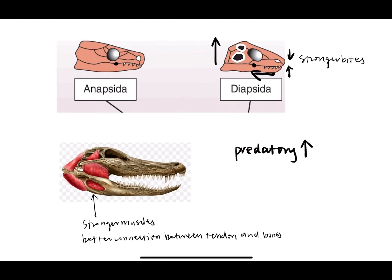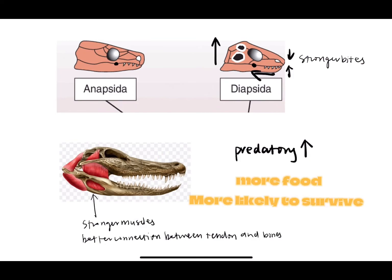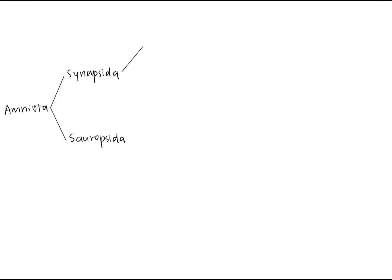As we all know, feeding is of primary importance among animals. The more food you get, the more likely you are going to survive and pass your genes to the next generation. In fact, temporal fenestrae are usually used as a marker to draw up the evolutionary tree.